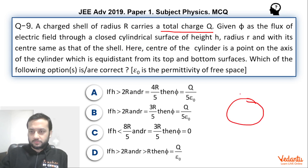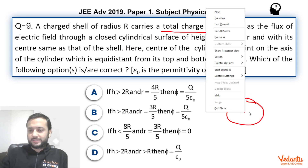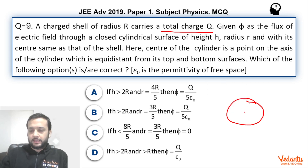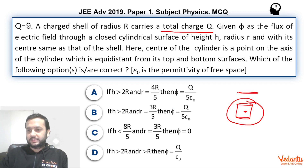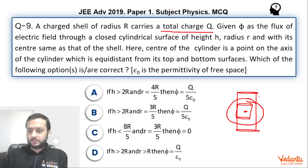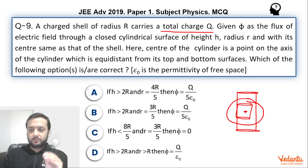If this is the shell, the cylinder would be placed such that the center of the cylinder coincides with the center of the shell. Depending upon the height of the cylinder and various options, it can look different. If h is large it can be like this; if h is small it can be like this. Depending upon the radius also, we will see different scenarios — whether this cylinder is enclosing the whole shell or only a part of it. The essence is that the cylinder is symmetrically placed with respect to the shell.